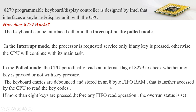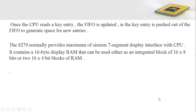In this RAM we can store only 8 bytes of information — 1 byte is needed for 1 key press. So a maximum of 8 bytes can be stored in the FIFO RAM at a time. If more than 8 bytes are pressed before starting any FIFO read operation, it sets an overrun status. Once the CPU reads a key entry, the FIFO is updated — the key entry is pushed out of the FIFO to generate space for new entries.